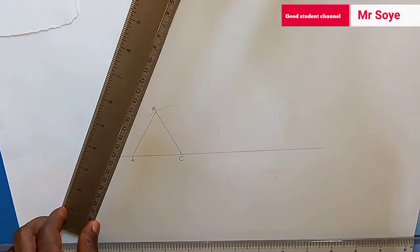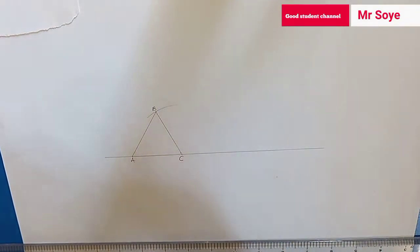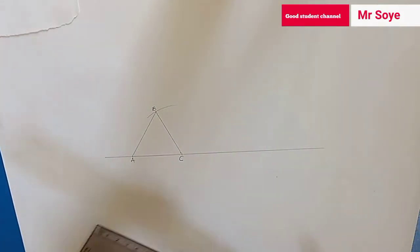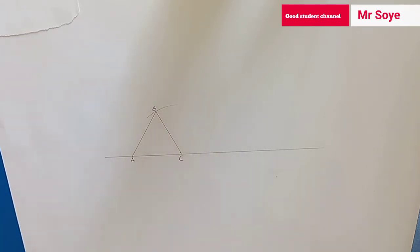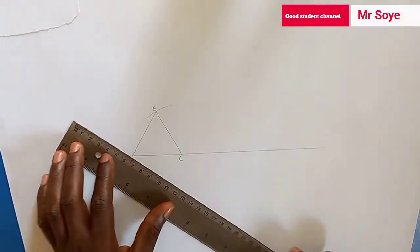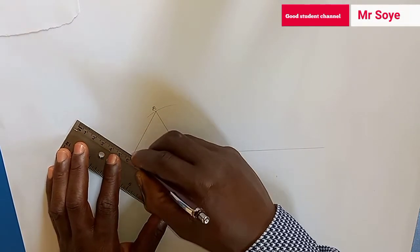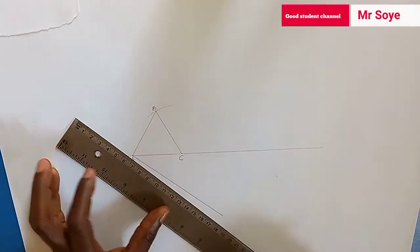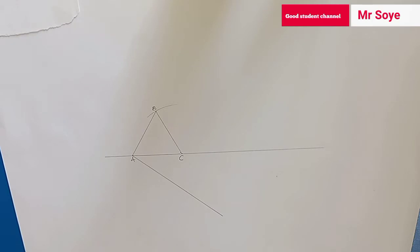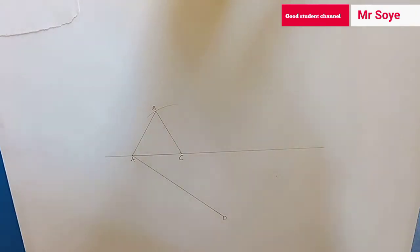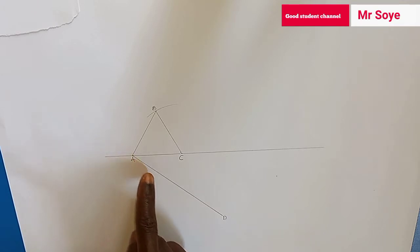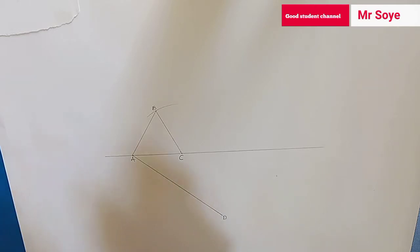The next thing is to draw a line AD at any convenient angle, meaning it's not necessary to measure the angle precisely. Draw it like this from point A.